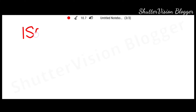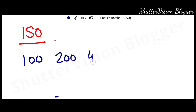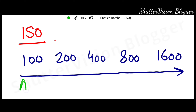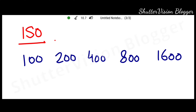So first we will start with the ISO. When we increase the value of the ISO, our sensor's light sensitivity increases. Now we take a sample of the ISO values starting from 100 to 1600. If we move from 100 to 1600, our light sensitivity will increase. This means that in our final image the amount of light will increase. For example, if we jump from one ISO value to double that ISO value, we are increasing the amount of light.